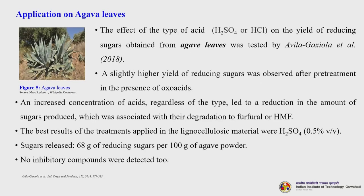Application on agave leaves: Avila-Gaxiola et al. in 2018 tested the effect of sulfuric acid or hydrochloric acid on the yield of reducing sugars from agave leaves. A slightly higher yield was observed after pretreatment with oxoacids. Increased acid concentration regardless of type led to reduction in sugars due to degradation to furfural or hydroxymethyl furfural. The best results were with sulfuric acid at only 0.5% v/v, yielding 68 g reducing sugar per 100 g agave powder with no inhibitory compounds detected.